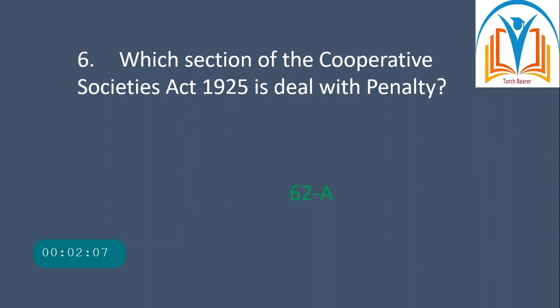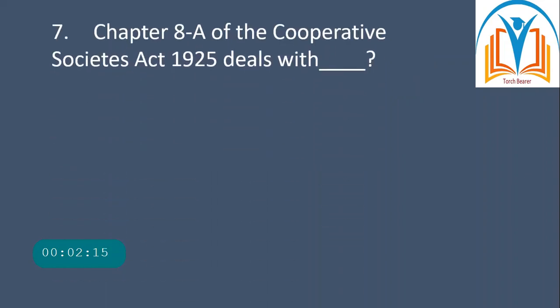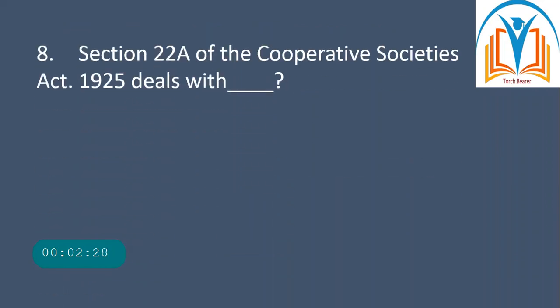Next question: which section of the Cooperative Societies Act 1925 deals with penalty? Section 62A deals with penalty. Next, Chapter 8A of the Cooperative Societies Act 1925 deals with distraint.